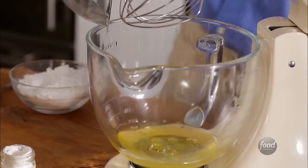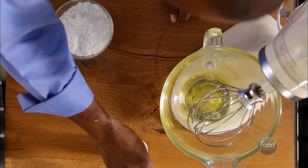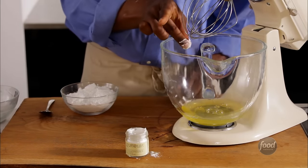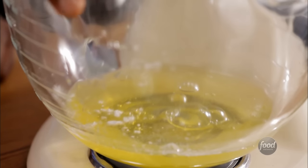Start with room temperature egg whites, they whip higher. Add a pinch of cream of tartar. It's acidic and that adds stability and volume to the egg whites.